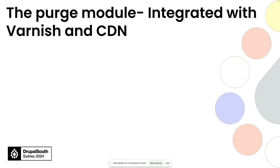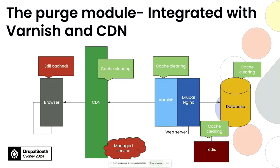The Purge module, along with related sub-modules, integrates Drupal's cache tag system with Varnish and CDN. With Purge configured, when Drupal initiates a cache clear, it sends signals to Varnish and the CDN telling them to clear that particular page based on its tags. This all starts from Drupal and requires no additional customization.